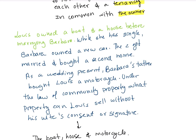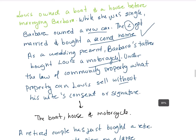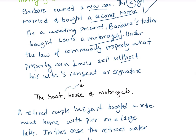Lois owned a boat and a house before marrying Barbara. Barbara owned a farm before they married. The two got married and bought a second home together. At the wedding, Barbara's father gave Lois a motorcycle. Under community property law, the question is what property Lois can sell without his wife's consent.